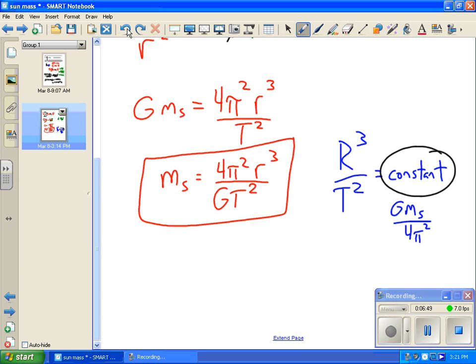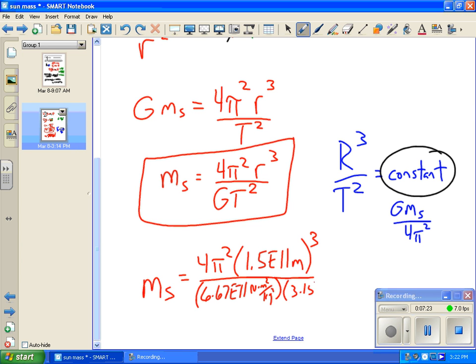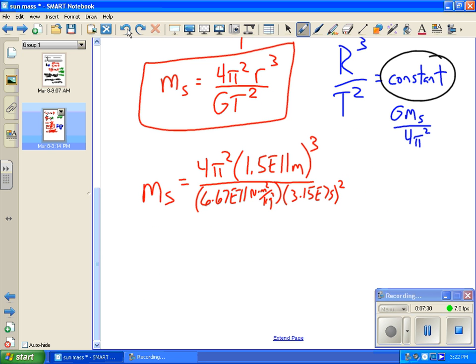If I want to actually finish this question and answer what's the mass of the Sun, I'm going to multiply 4 times pi squared times 1.5 times 10 to the 11 meters cubed, divided by big G, which is 6.67 times 10 to the negative 11, times that period squared in seconds. When I do that math, I get for the mass of the Sun 2.01 times 10 to the 30th power kilograms.